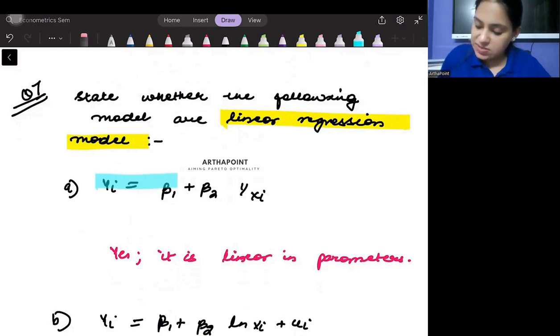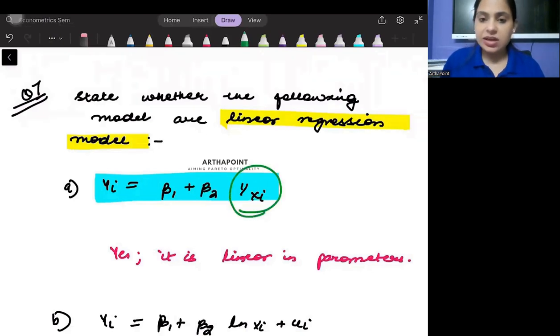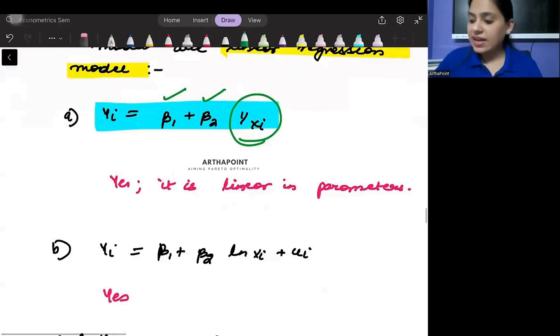Okay, so try to see the first case. Clearly, this is a reciprocal model. Here is 1 by x, reflecting that x is coming in the reciprocal form. But it does not matter. Beta 1 and beta 2 are in linear form. And therefore, we can say that it is linear in parameters.